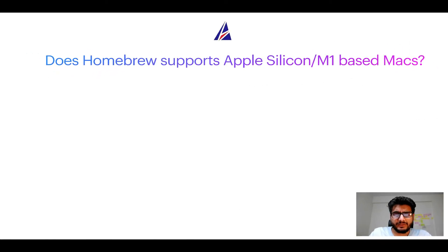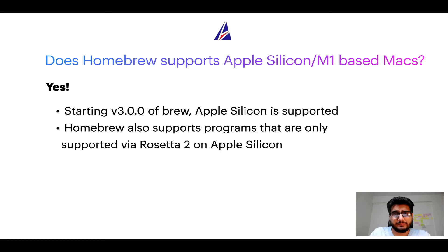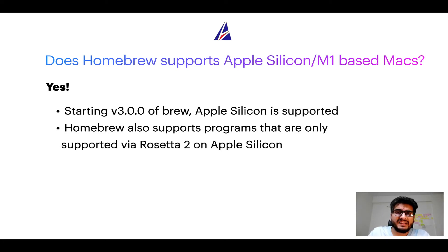Next question: can you use Homebrew to install programs on Apple Silicon, more popularly known as M1 MacBooks? Again, yes. Starting with version 3.0 of Brew, Apple Silicon is now supported on Homebrew. In fact, Homebrew also supports programs that are at the moment only supported via Rosetta 2 on Apple Silicon. Now that I have answered your questions on safety and compatibility of Homebrew, let's get to the installation process.